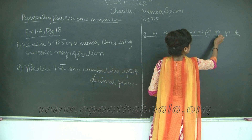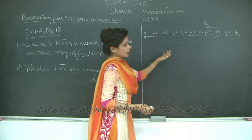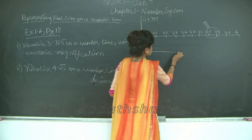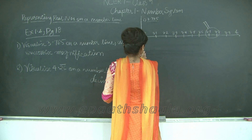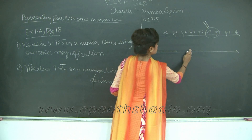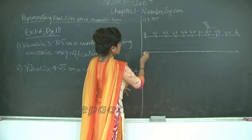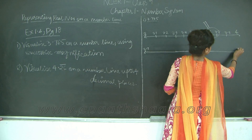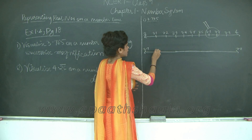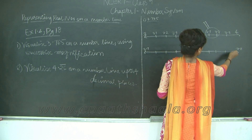Therefore I am going to magnify the section around 3.7 using a magnifier, and draw a number line that will now have intervals at 3.7 and 3.8. I divide this number line into 10 equal parts: 1, 2, 3, 4, 5, 6, 7, 8, 9, and 3.8.